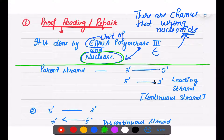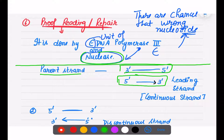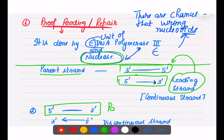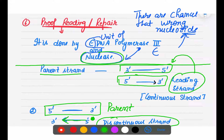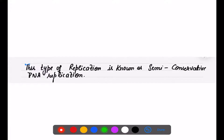To summarize strand rules: if the parent strand runs 3' to 5', the new strand forms in the 5' to 3' direction — this is the leading strand. If the parent strand runs 5' to 3', the RNA primer attaches at the 3' end, new nucleotides add in the 5' to 3' direction, and this strand forms discontinuously — it is the lagging strand.